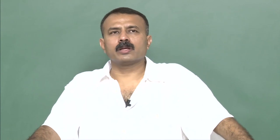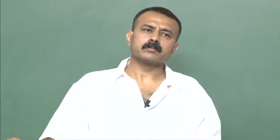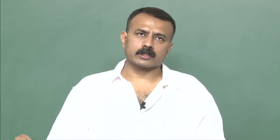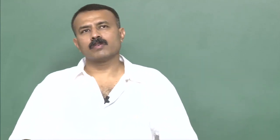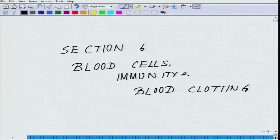The broad classification of blood includes different kinds of blood cells. In this first class, we will outline all the different kinds of blood cells, how they are formed, what their functions are, and what physiological problems arise from their deficiency or excess. We will be covering three parts: blood cells, immunity, and clotting.